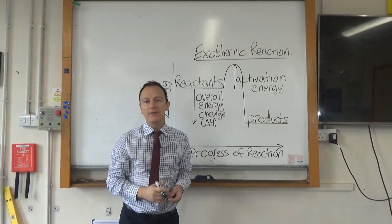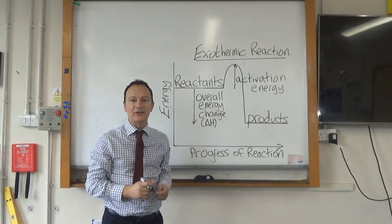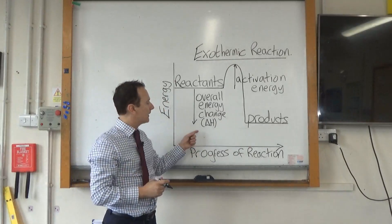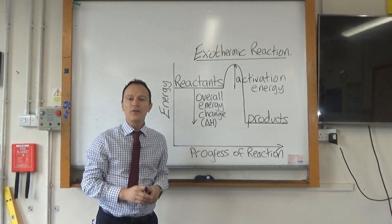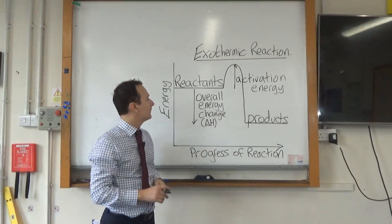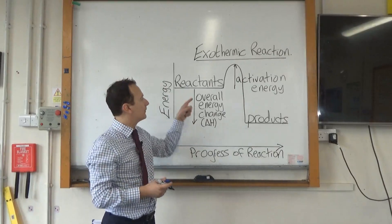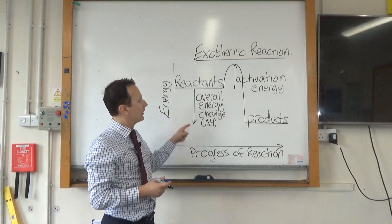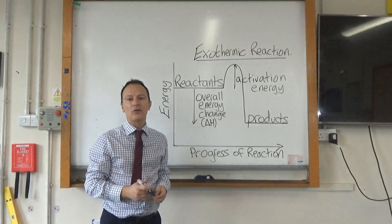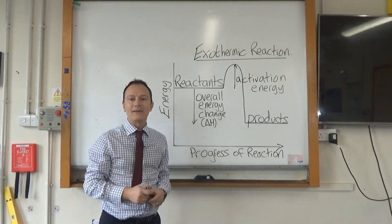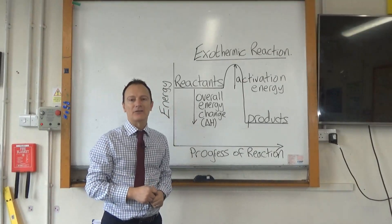The other label you need to put on is the overall energy change, which we can also call delta H. The overall energy change is the energy level from the start to the finish — it goes from the reactants to the products. Make sure you can draw and label this exothermic reaction profile.